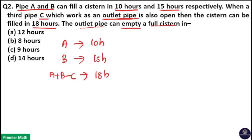Here you can see A fills a cistern in 10 hours, B fills in 15 hours. So when A, B, C are working together, they will fill it in less than 10 and 15 hours. But here it is 18 hours because C is an outlet pipe.